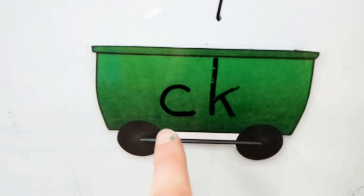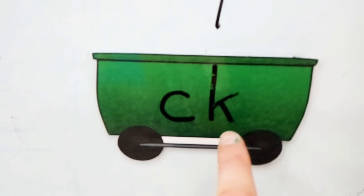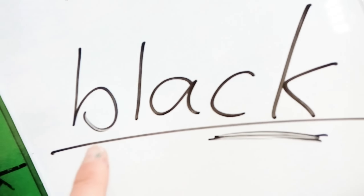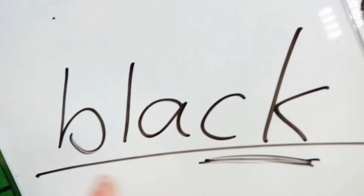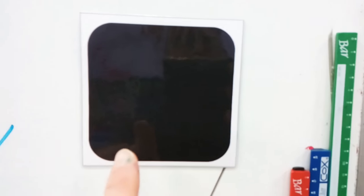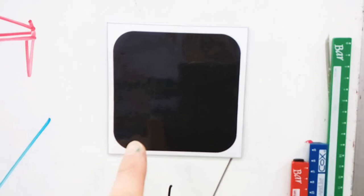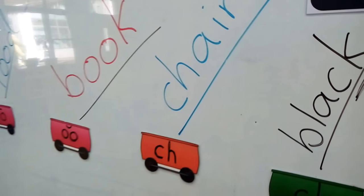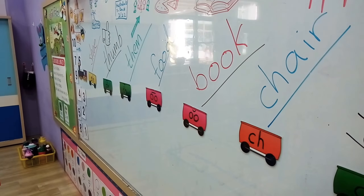CK says k, black - the square is black. Alright, that's it for phonics time. We'll see you next time.